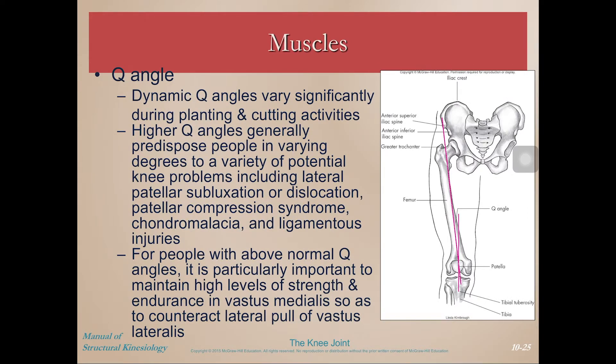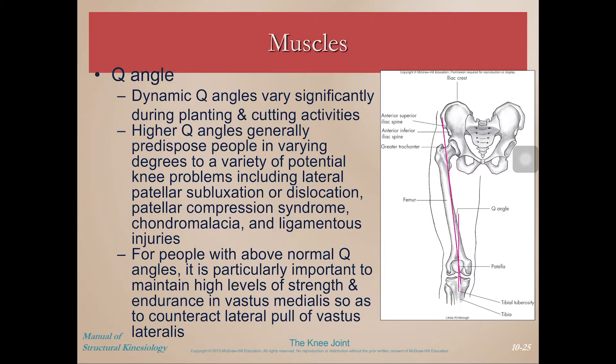Why is that important? Q angles are dynamic and they vary significantly during planting and cutting activities. In the previous two videos we talked about how the knee is very structurally sound because of all the ligaments as well as the musculature that crosses it. But because of this Q angle, especially during dynamic activities like cutting and change of direction, we can go into a more extreme Q angle — extreme knee valgus — which can put a lot of stress on those ligamentous structures. People with higher Q angles are generally more predisposed to varying degrees of potential knee problems, including patellar subluxation, dislocation, compression syndrome, chondromalacia, and other ligamentous injuries like ACL tears or MCL tears.